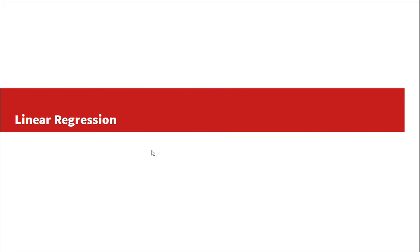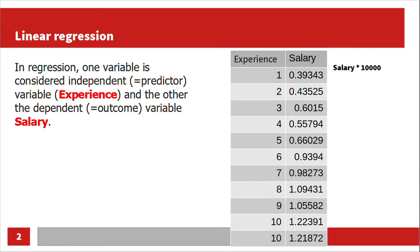Hello everyone, today I will try to explain linear regression. As you might know, linear regression is a supervised learning algorithm — not a classification algorithm. There's a difference: in classification, you try to predict a category label, like yes or no.